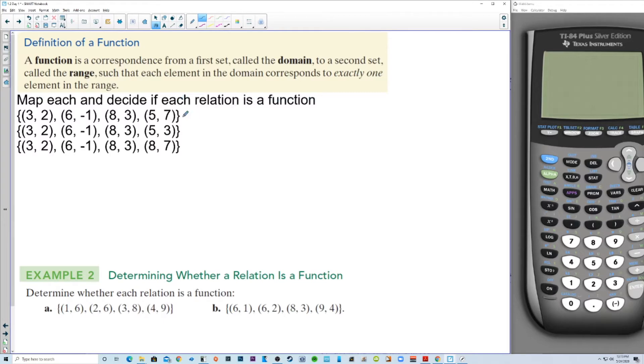So we're going to map each and decide if each relation is a function. Now, three has one output, six has one. Each of these has one output. So this is a function. Yep. This is a function. And then how about the next one? Domain, three, six, eight, five. And we have the range, which is two, negative one, two, negative one, three, and three. But we only write three once. So three goes to two, six goes to negative one, eight goes to three, and five goes to three. Now, that's okay. That's good. That's okay to be a function. That's a function. Because eight only has one output, five only has one output. They're going to the same value, but that's okay. That's fine.